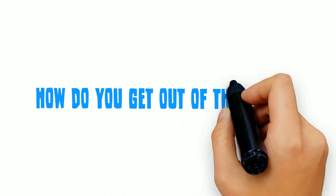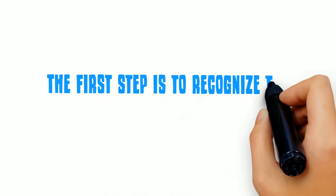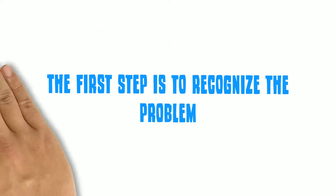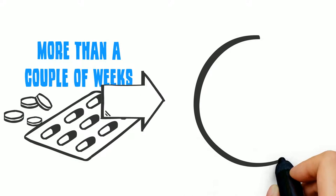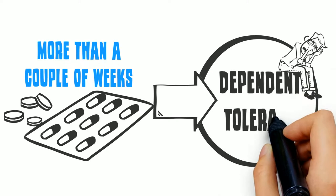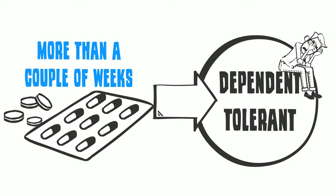How do you get out of this cycle? The first step is to recognize the problem. If you have been taking narcotics for more than a couple of weeks, you are most likely dependent, tolerant, and going to have withdrawals if you stop.